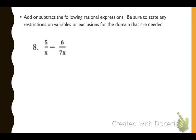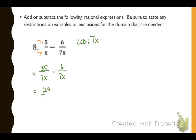Number 8: no factoring needed. We find a common denominator using 7 and x from both denominators, multiplying the first rational top and bottom by 7 while the second needs no adjustment. We combine the numerators over the common denominator, and exclude any values that make the denominator 0 — so x cannot equal 0.